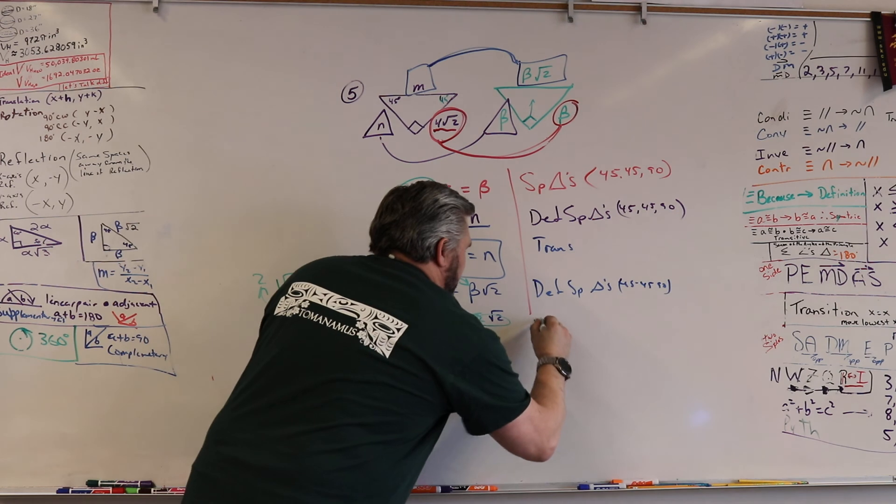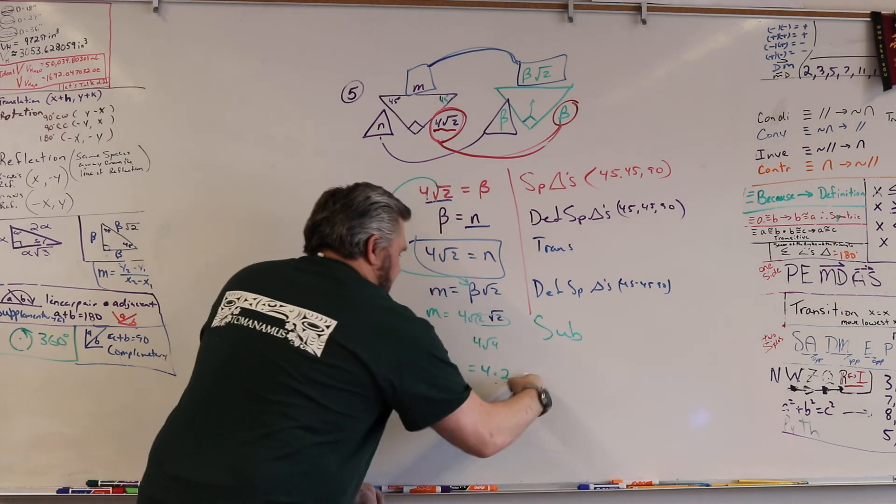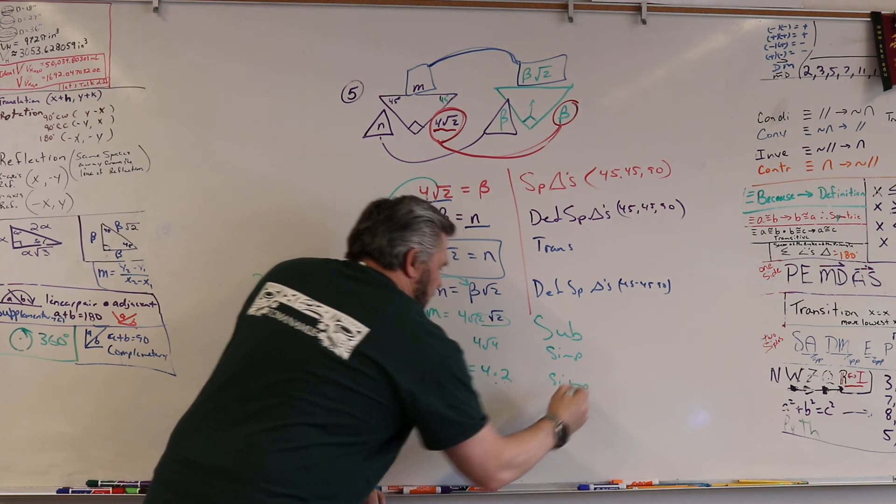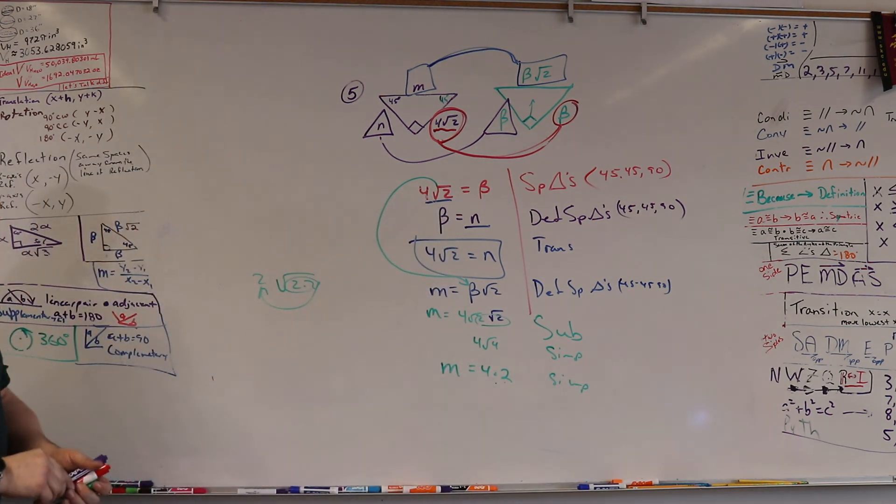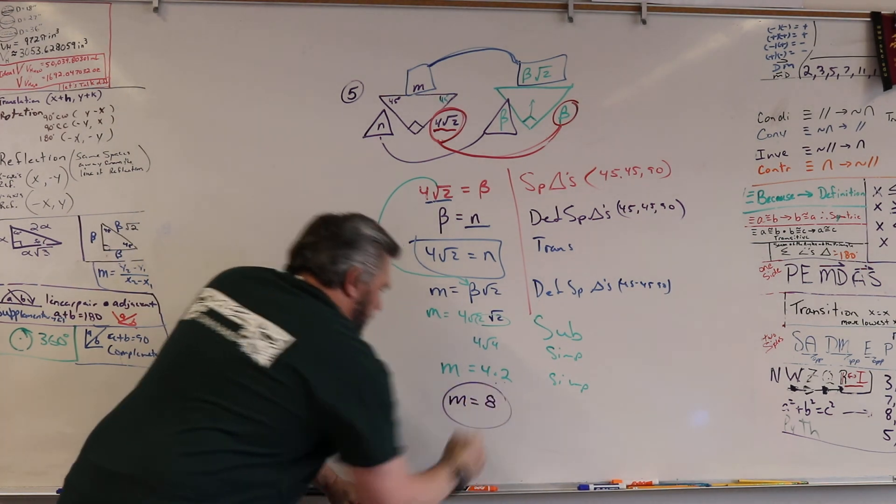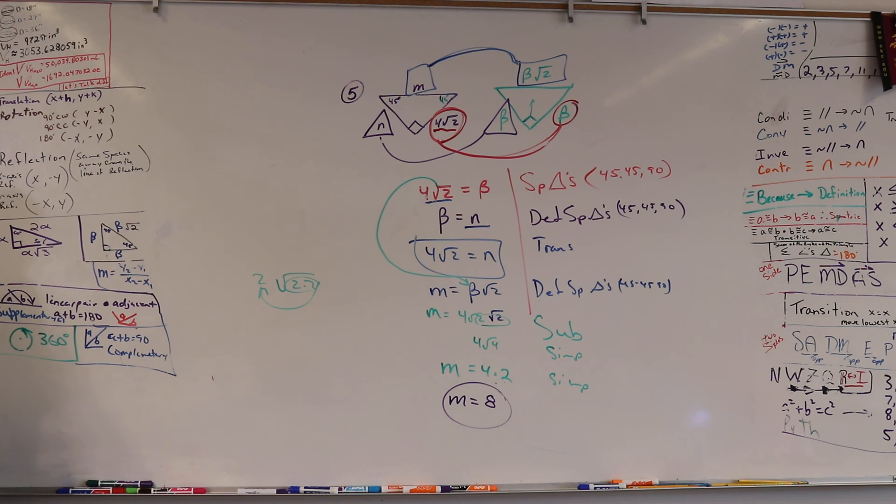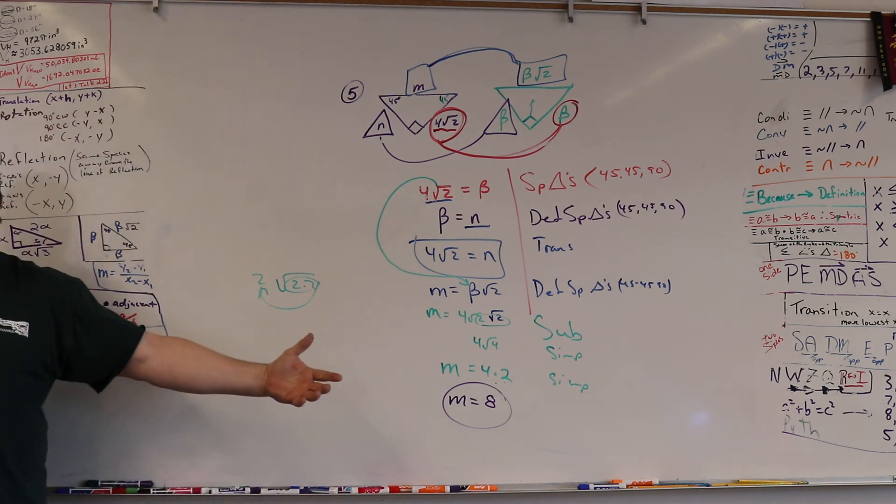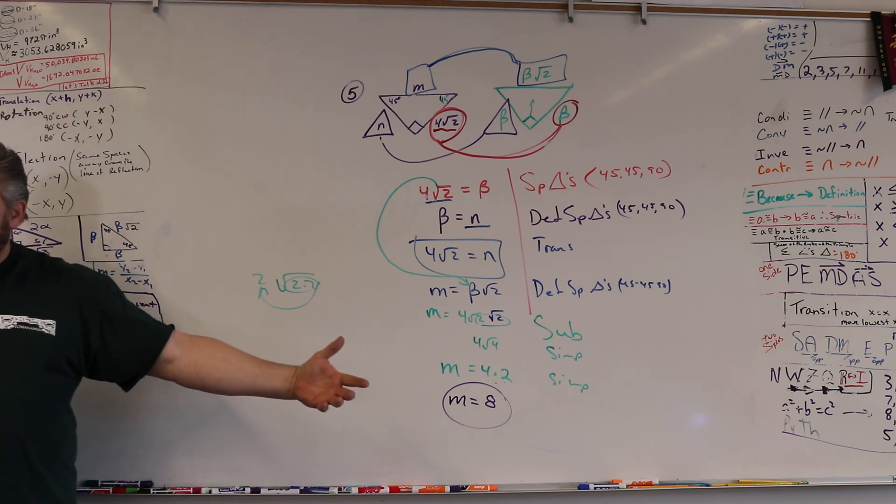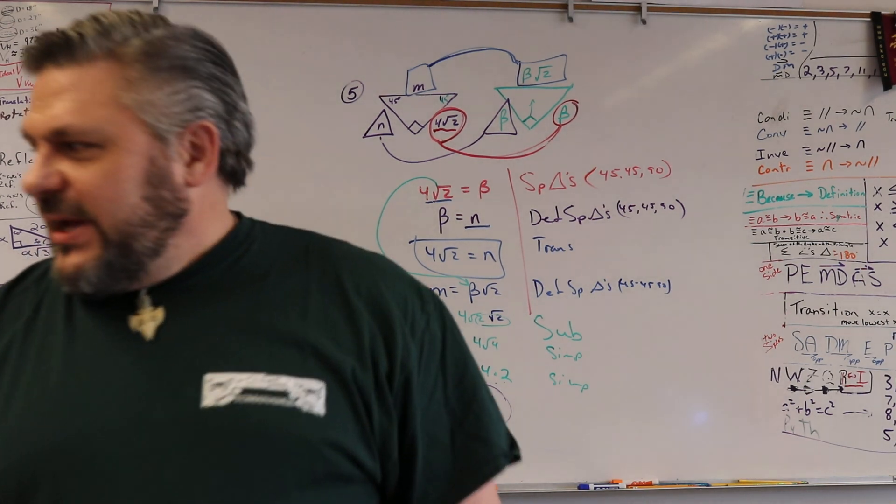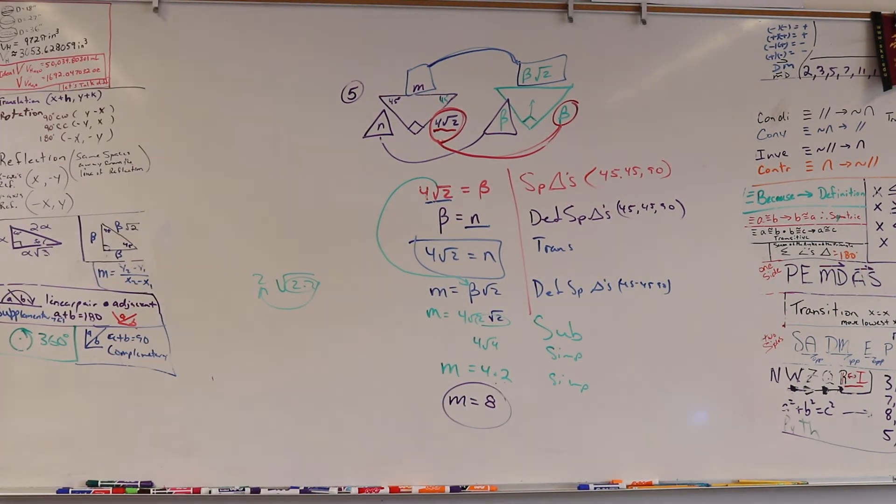Right? And what did you end up with? Eight. M equals eight. There it is. Oh, it's square roots. I got to copy that. Questions? Is that a little better? Kind of, yeah. Kind of? Somewhat. Yeah, okay.